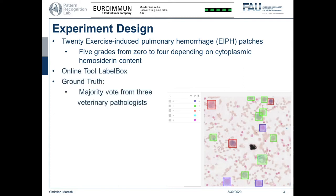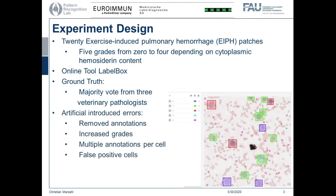For annotating this, we employed the online tool LabelBox, and the ground truth was created by a majority vote from three veterinary pathologists. To find potential errors or biases towards accepting pre-computed annotations, we artificially removed annotations, increased grades, added non-maximum suppression artifacts like multiple annotations per cell, and also introduced some false positives.